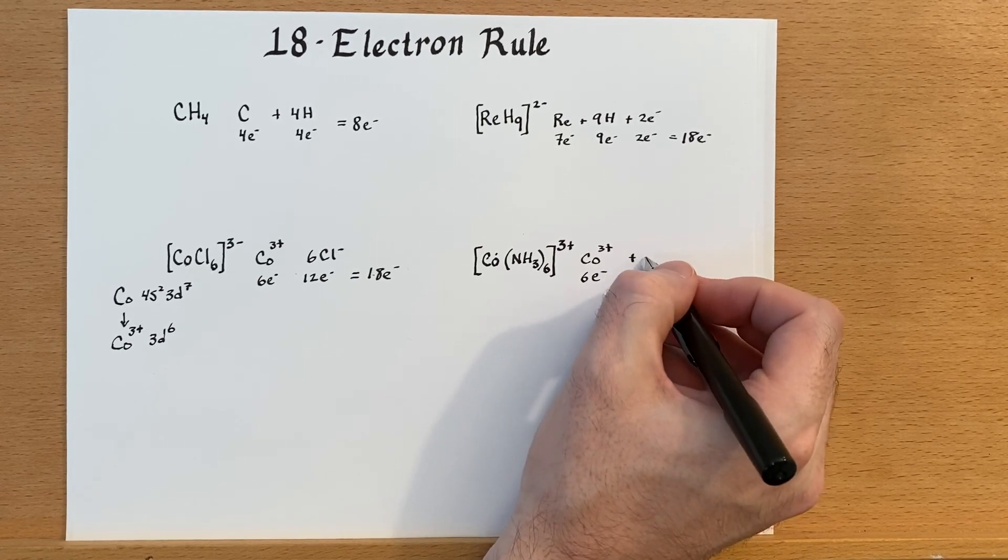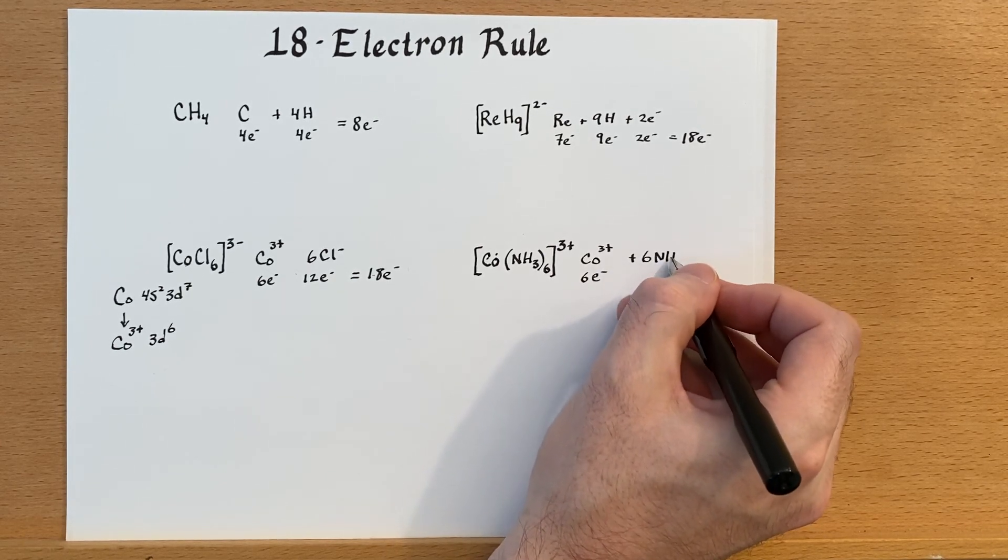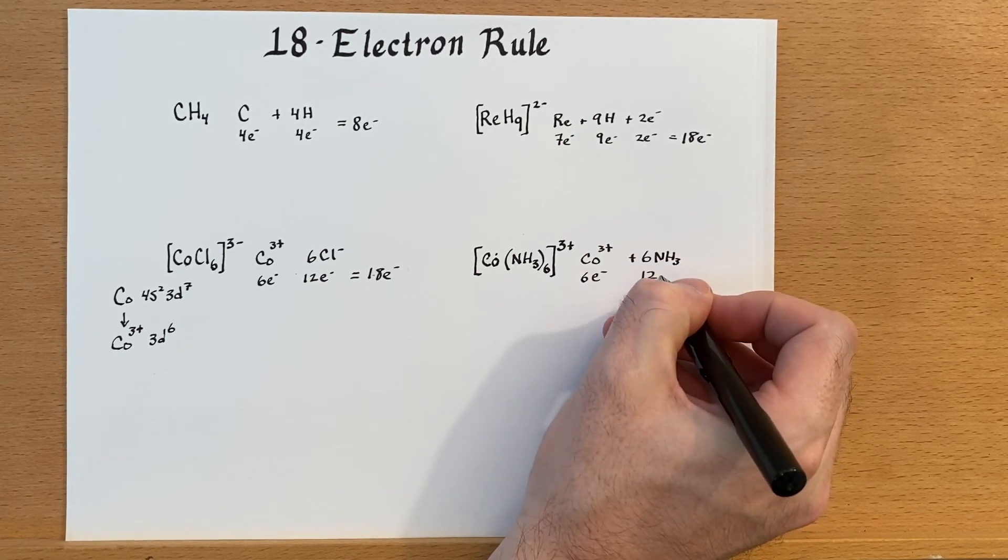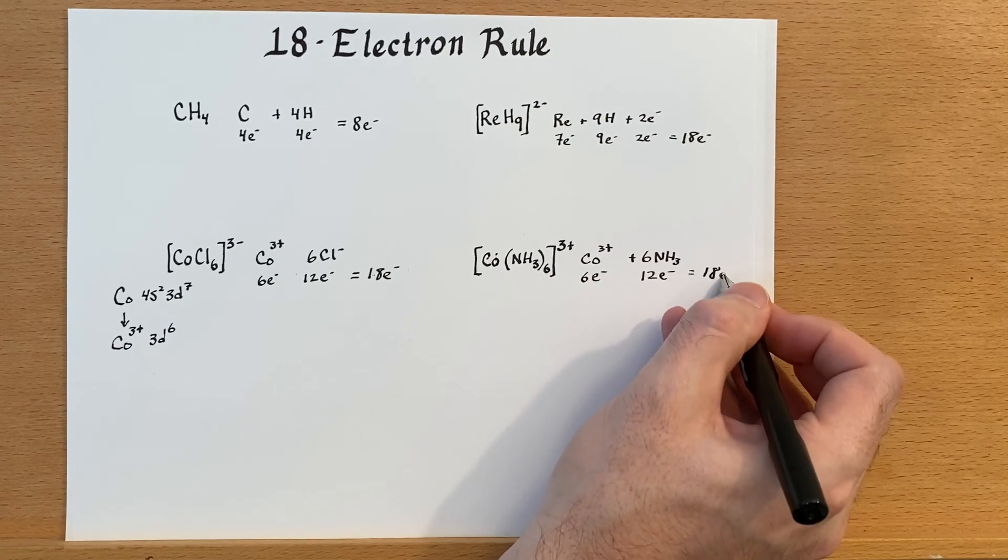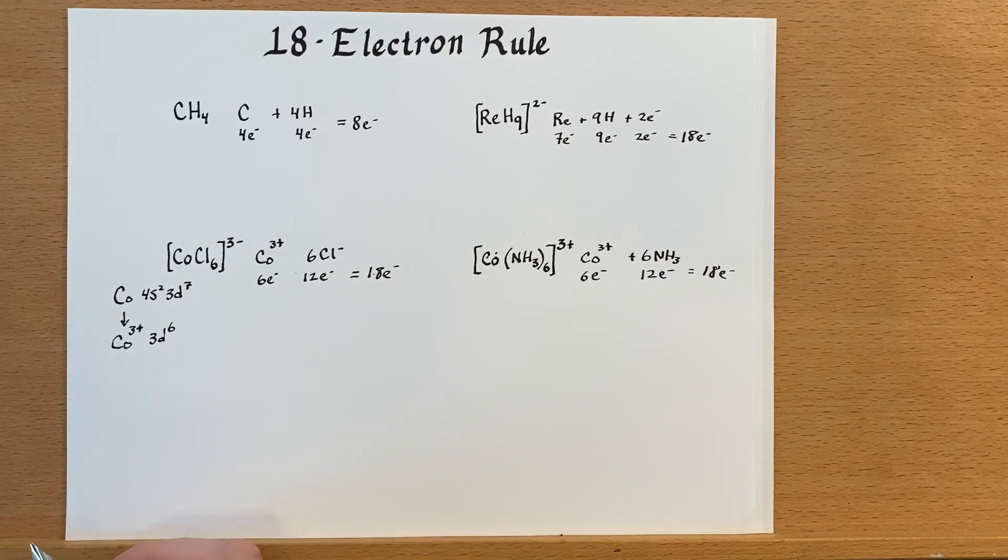And then our six amines are going to give us 12, which again is 18. And it's not necessarily the case that every complex would follow the 18-electron rule, but they often do. And it is very uncommon for us to have an electron count that goes beyond 18. So that's something to keep in mind. It does happen, but it's very rare with the transition metal elements.